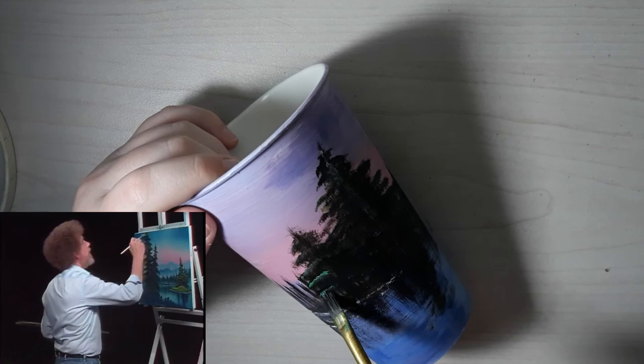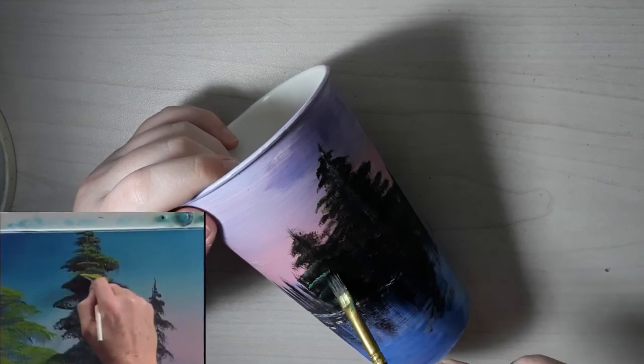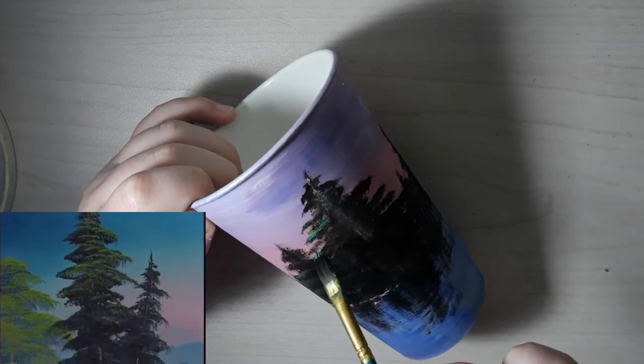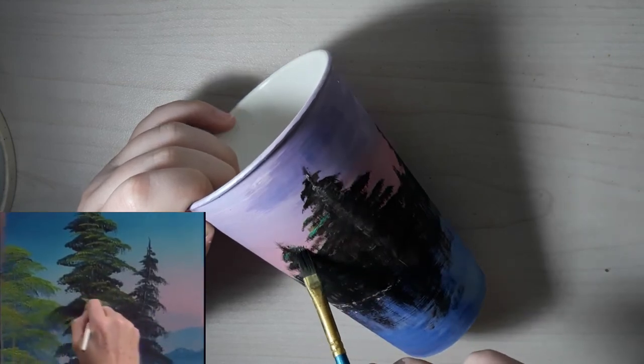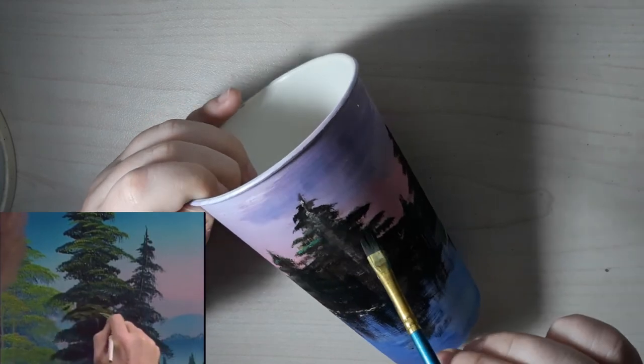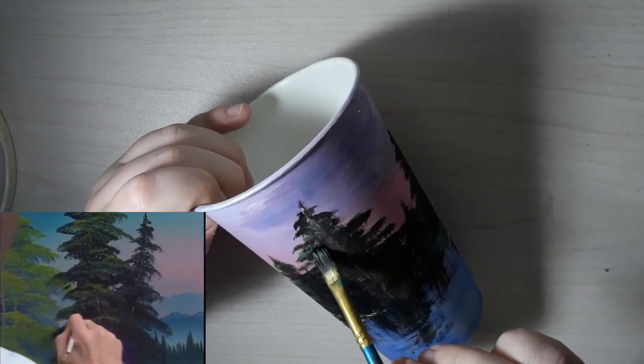Let's put a highlight or two on here. Evergreens are normally darker than other trees. So don't kill all the dark area in your evergreen. It happens sometimes. It gets feeling good, and you don't know when to stop.